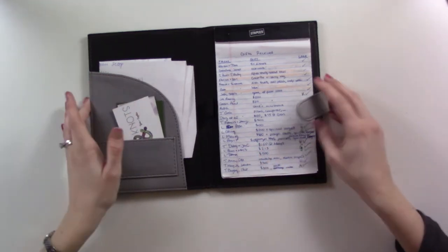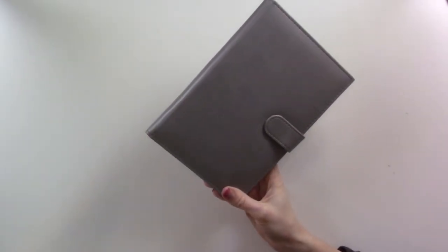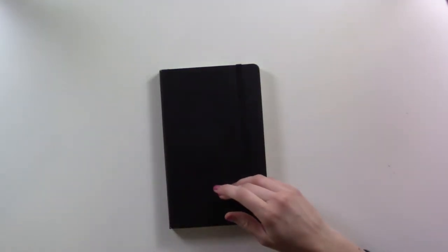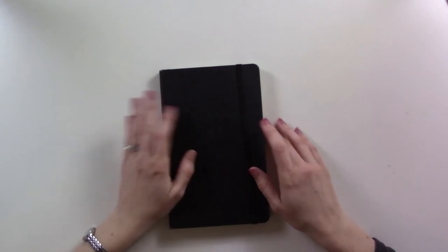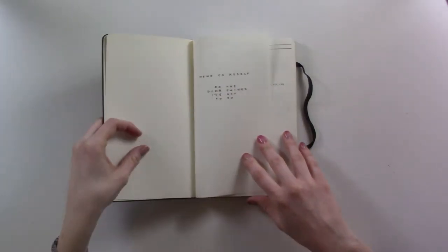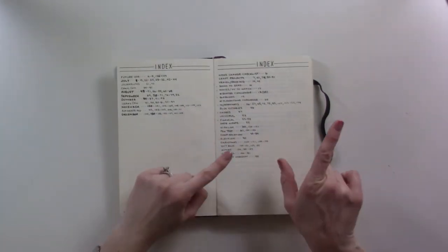But shortly after, exactly a month after we got married, I saw a video on YouTube that led me to learn about the bullet journal. So I started doing a bullet journal in 2016, the summer of 2016. This Moleskine started July 2016. I've done a whole video flipping through this.